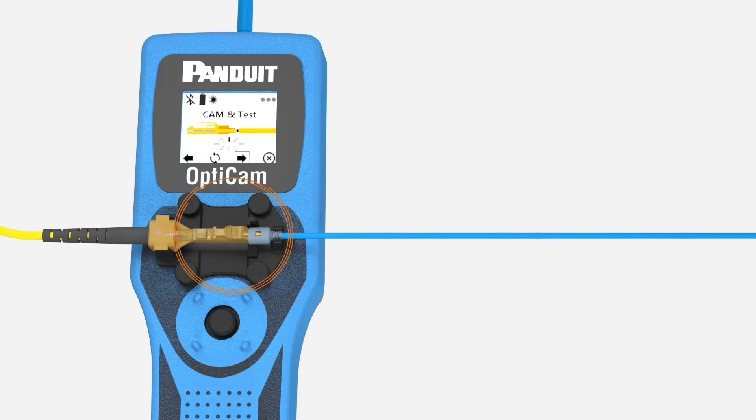Maintain forward pressure on the fiber as you cam the connector by rotating the body of the connector towards you for a right-handed setup or away from you for a left-handed setup. Once the connector is fully cammed, click the main navigation button on the OptiCam tool to perform the insertion loss calculation. The tool's default pass value is 0.75 dB insertion loss, but this value can be adjusted in the tool settings if a job requires it.